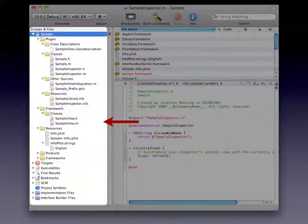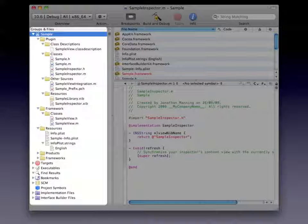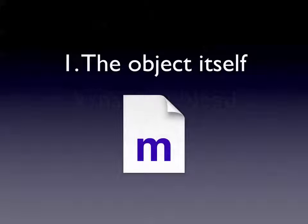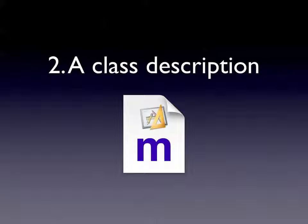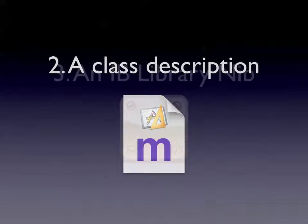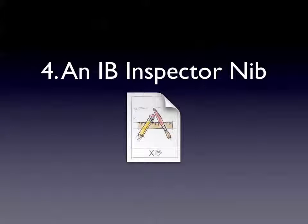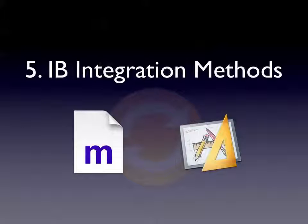Finally, we have your code itself — the bit you've written, the bit you want to push out to people. This can be an NSObject subclass, an NSView subclass, anything you like — anything you want to bundle up, put in the library, and make reusable. So, what do you need? You need the object itself, a class description so IB knows how to represent it, a library nib so IB knows how to draw what appears in the library, an inspector nib so IB knows how to draw the inspector palette, and integration methods so IB knows how to deal with your object.